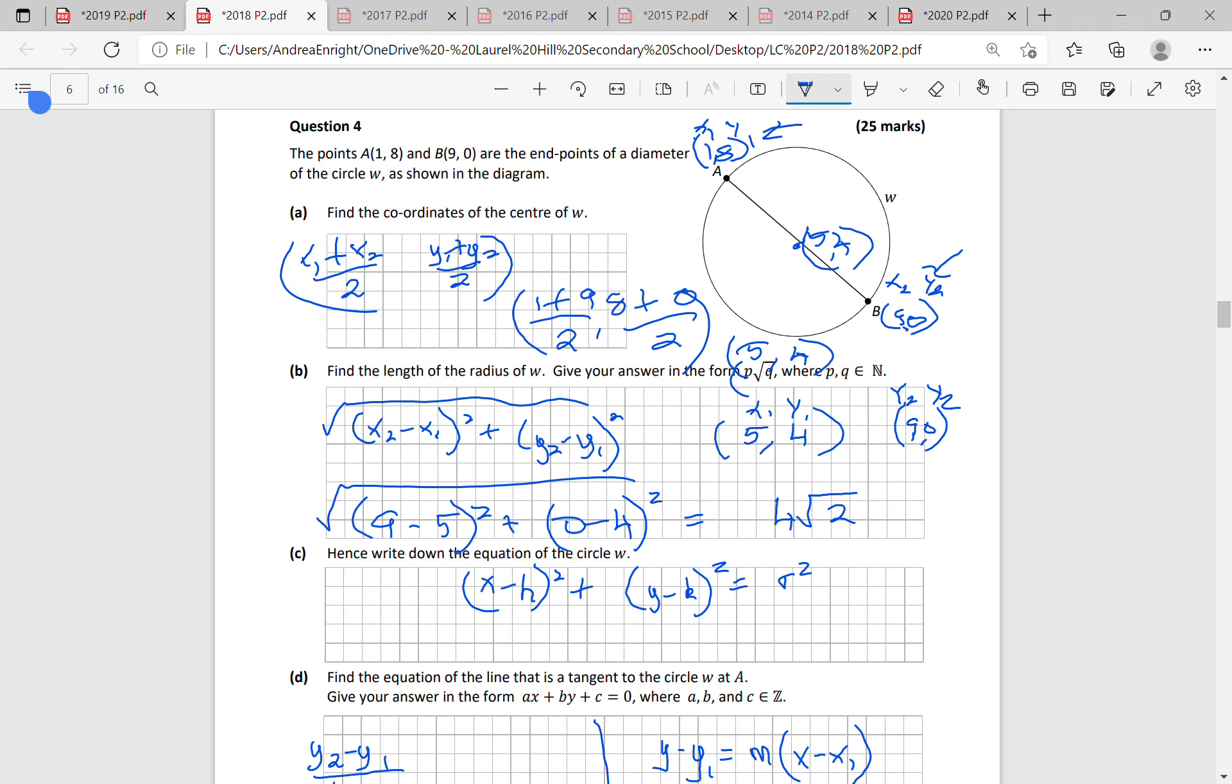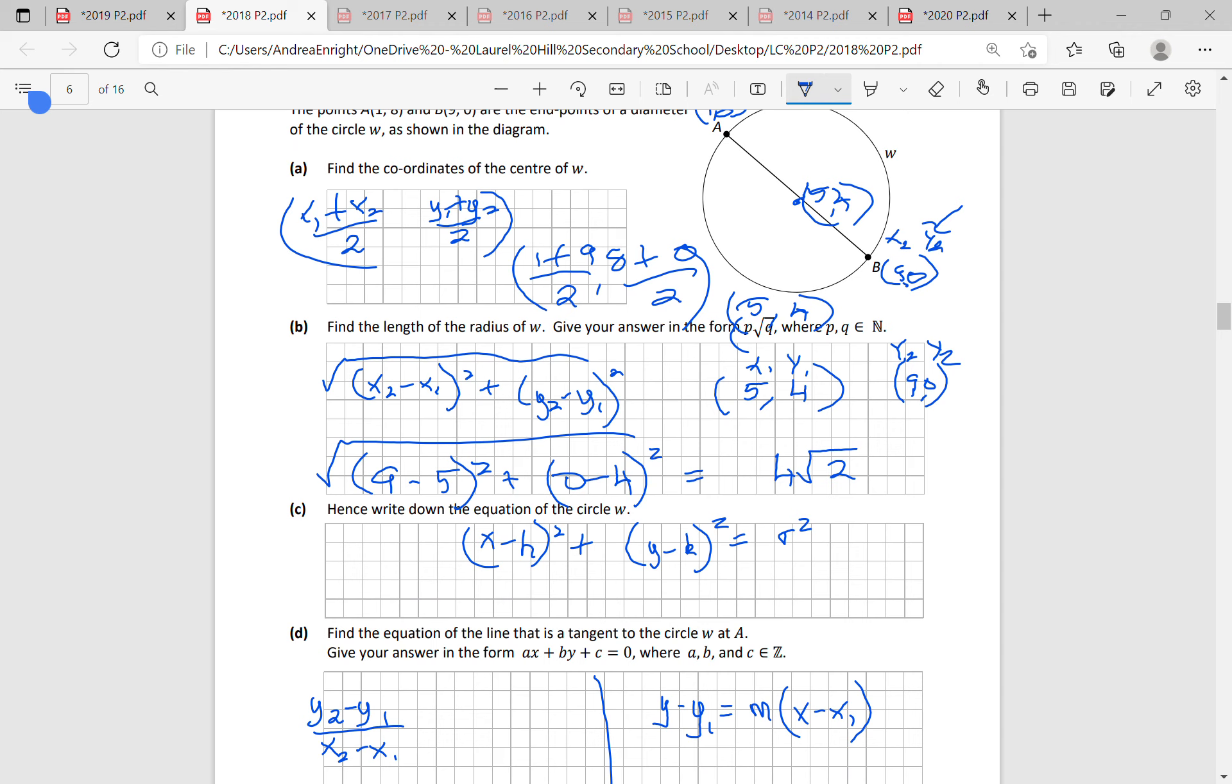Hence, write down the equation of the circle. So a formula for the equation of the circle is x minus h squared plus y minus k squared equals r squared. The centre is h, k, so 5, 4 is h, k. And the radius is, you've just calculated 4 root 2.